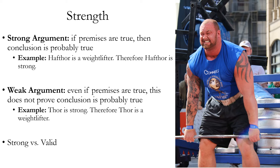In a valid argument, if you had true premises and tried to make the conclusion false, you would create a logical contradiction. In a strong argument, it's always logically possible or conceivable that the conclusion is false even if the premises are true. A strong argument makes the conclusion highly probable based on the premises, but there's no logical contradiction if you have true premises and a false conclusion.